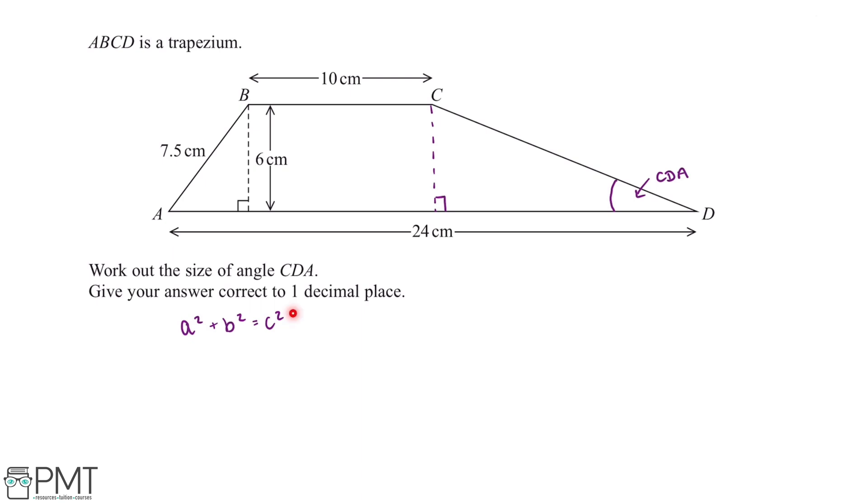And C squared is always the hypotenuse which is the longest length. So we can see from this diagram that the line A, B will be the hypotenuse of this triangle.